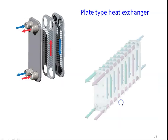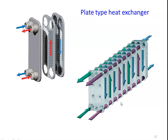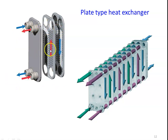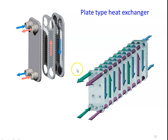This is again a plate type heat exchanger. The red color line is for the hot fluid and the blue color line for the cold fluid, and they flow in alternating gaps between the plates.